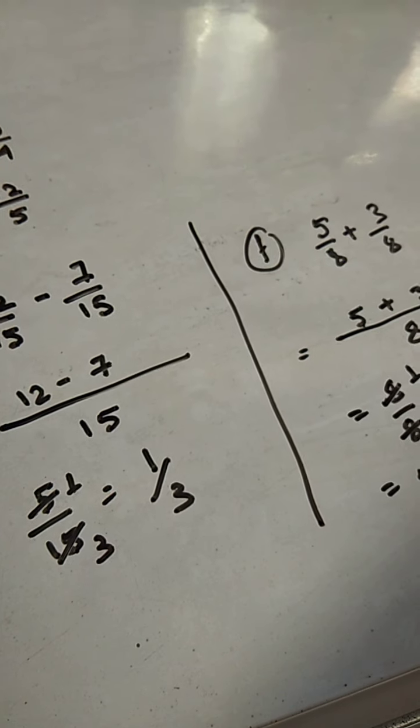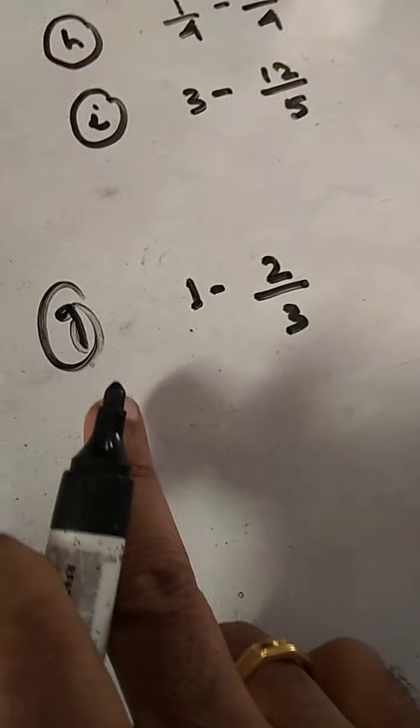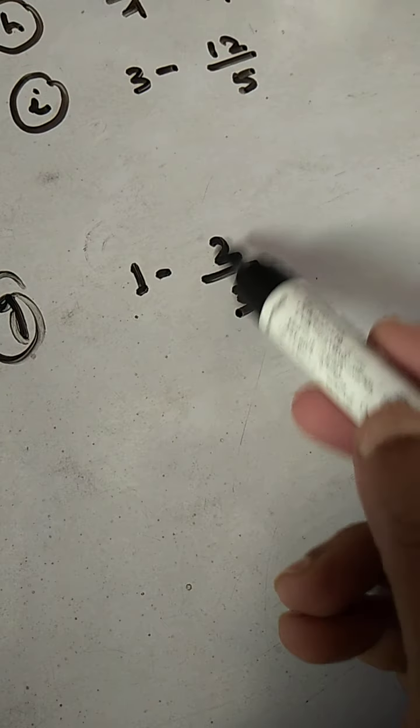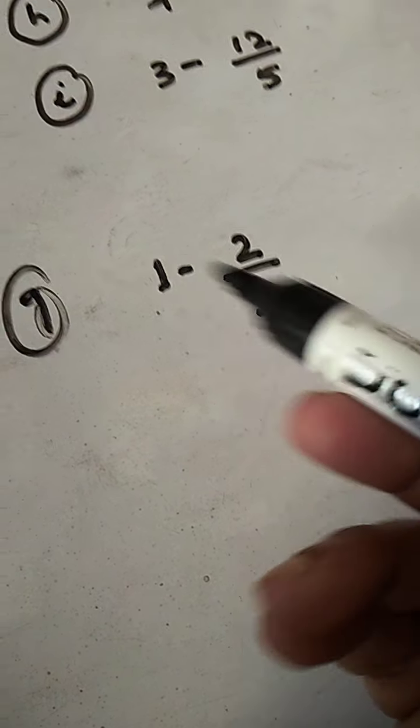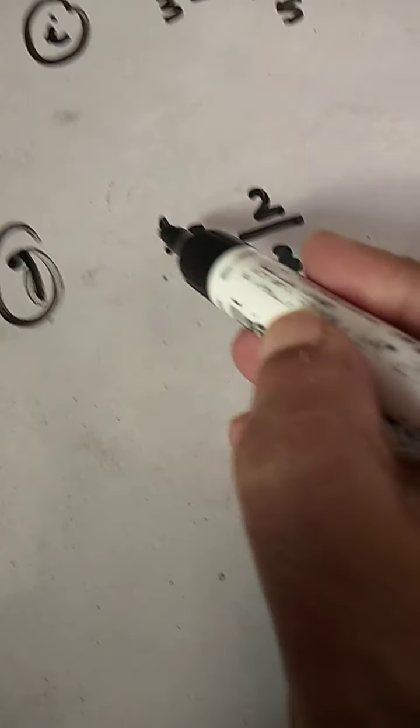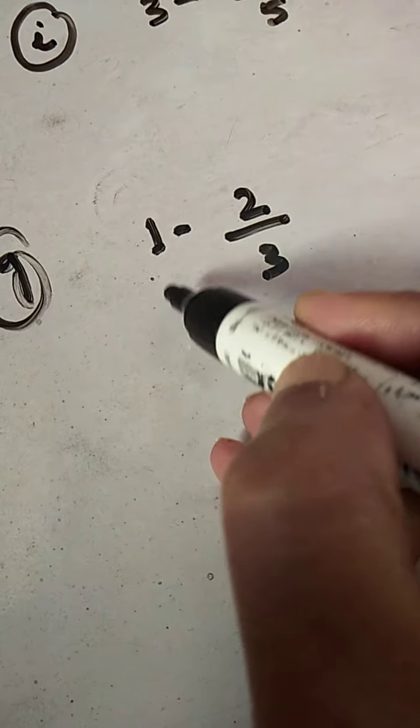Now, let us move on to sum number G. This sum number G, these two fractions, there is a number and one fraction, and they are not carrying the same denominator. So, we have to make a common denominator or same denominator. If I have to put a 3 out here, what do I have to do?